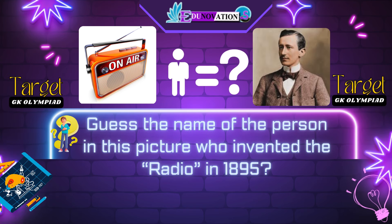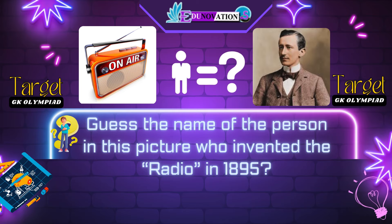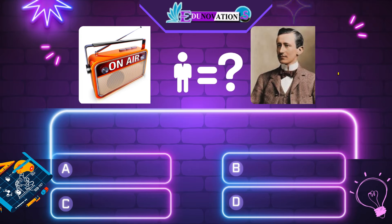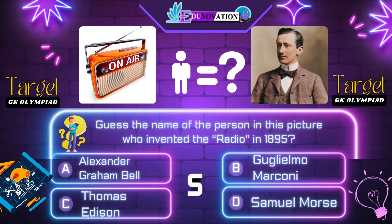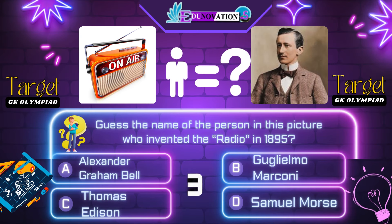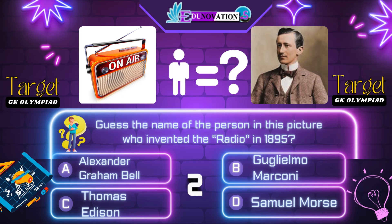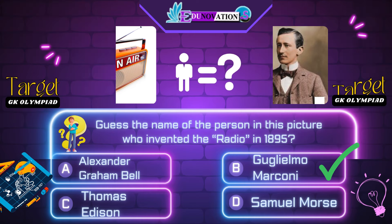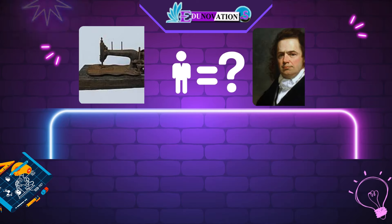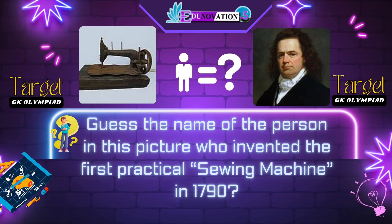Now next question. Guess the name of the person in this picture who invented the radio in 1895. Your options are: A. Alexander Graham Bell, B. Guglielmo Marconi, C. Thomas Edison, D. Samuel Morse. Time's up. Correct answer is B. Guglielmo Marconi.